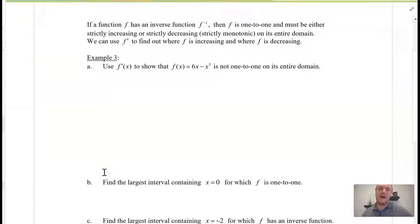So, if the function f has an inverse function, then f is one to one. And if a function is one to one, then it must be either strictly increasing or strictly decreasing, which we know is monotonic. Okay. So, we can use f prime to figure out is the function increasing or where is a function decreasing?